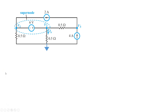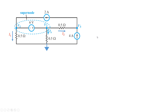Before we start on anything, let's first write down the directions of some currents. There is a 0.5 ohm resistor right here, so we can arbitrarily draw the currents. I'm going to arbitrarily choose a downward direction for that current and call it I1. Similarly for the other 0.5 ohm resistor, I'm going to choose an arbitrary current direction moving from V2 towards V3, and I'll call that I2.